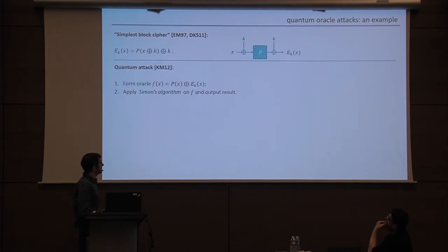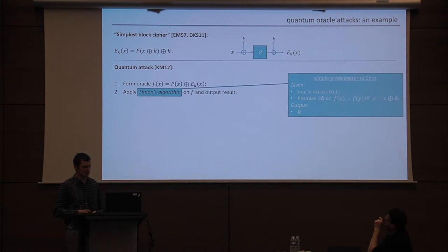So what happens quantumly? Quantumly, it turns out that there's an attack in the quantum oracle model. So how does this attack work? Well, it's pretty simple. It says, given that you have oracle access to P and oracle access to E, you should just form the XOR of these two things, and then run something called Simon's algorithm. So what is Simon's algorithm if you haven't seen it? So Simon's algorithm is a very simple predecessor to Shor's algorithm.